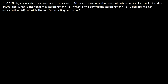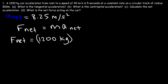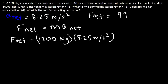Moving on to Part D — now that we have the net acceleration of 8.25 m/s², what is the net force acting on the car? Based on Newton's second law, the net force is mass times net acceleration. With a mass of 1200 kilograms and a net acceleration of 8.25 m/s², that's 1200 times 8.25, giving a net force of approximately 9,900 newtons.